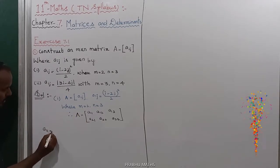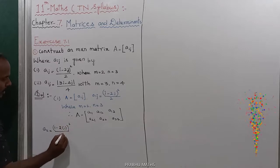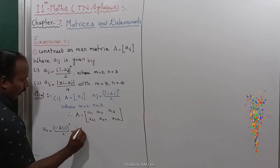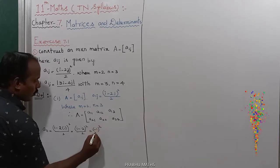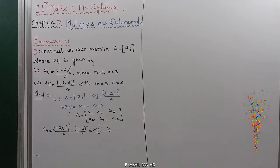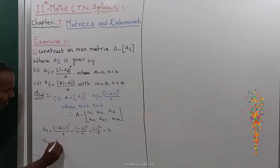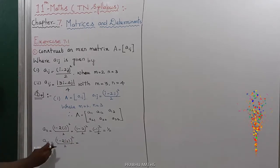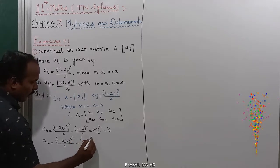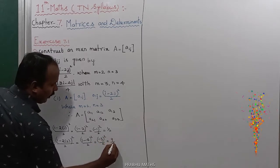A₁₁ equals (1 minus 2 into 1) whole square divided by 2, which is (1 minus 2) whole square divided by 2, equal to (-1) whole square divided by 2, equal to 1/2. Next, A₁₂: with i equal to 1 and j equal to 2, that is (1 minus 2 into 2) whole square divided by 2, equal to (1 minus 4) whole square divided by 2, equal to (-3) whole square divided by 2, equal to 9/2.